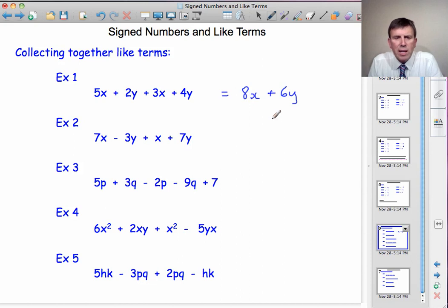And then the y's, plus 2y plus 4y, and that gives us plus 6y. And now we've collected together the like terms. X's are like other x's, y's are like other y's.